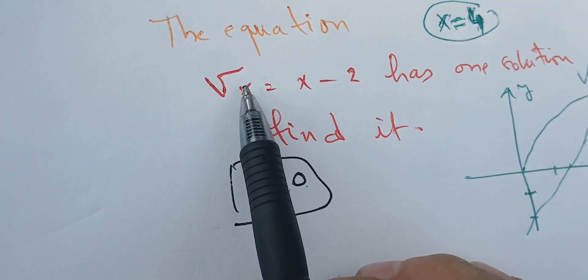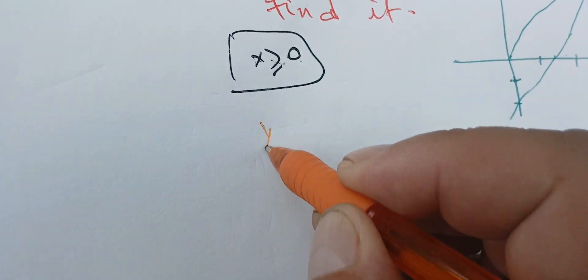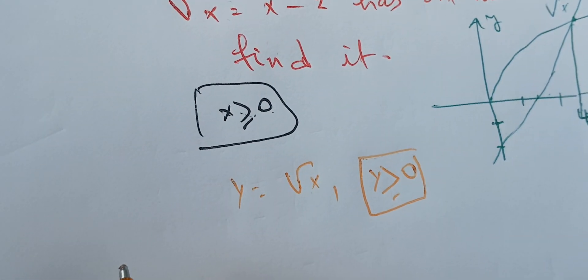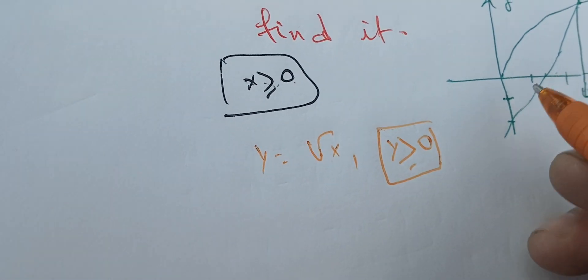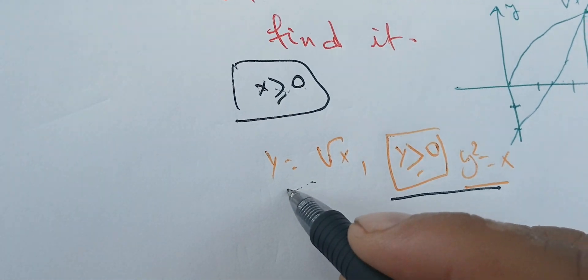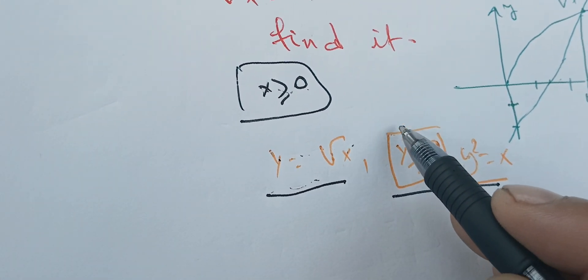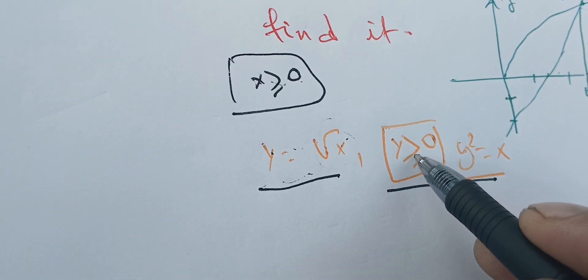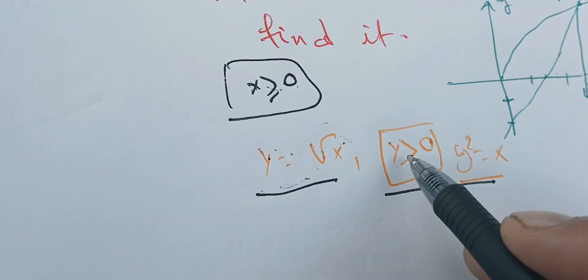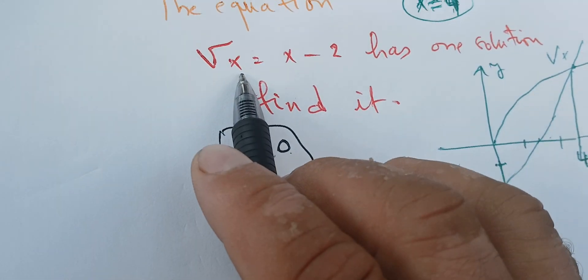The most important idea is to get rid of the square root. To do that, we change variables: let Y be the square root of X. That means Y is greater than or equal to 0. Once we do that, we notice that Y squared equals X. Since X is positive, squaring Y gives us X without an absolute value. These are the two key ideas.